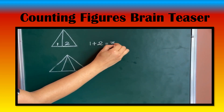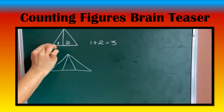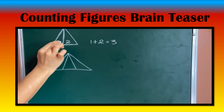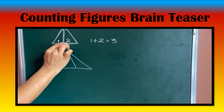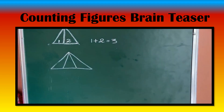Total 3 triangles in this: one is on the left side, the second one on the right side, and the third is the whole triangle.